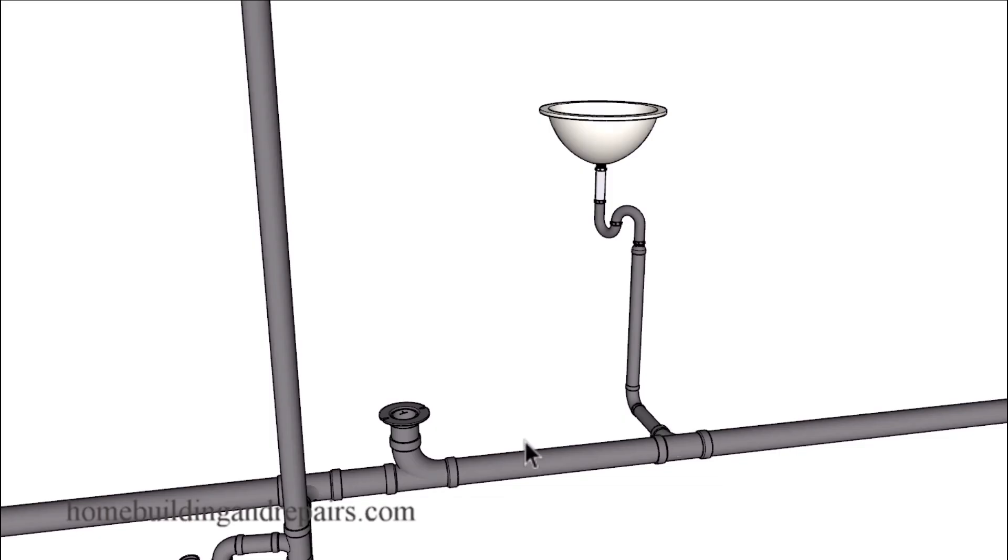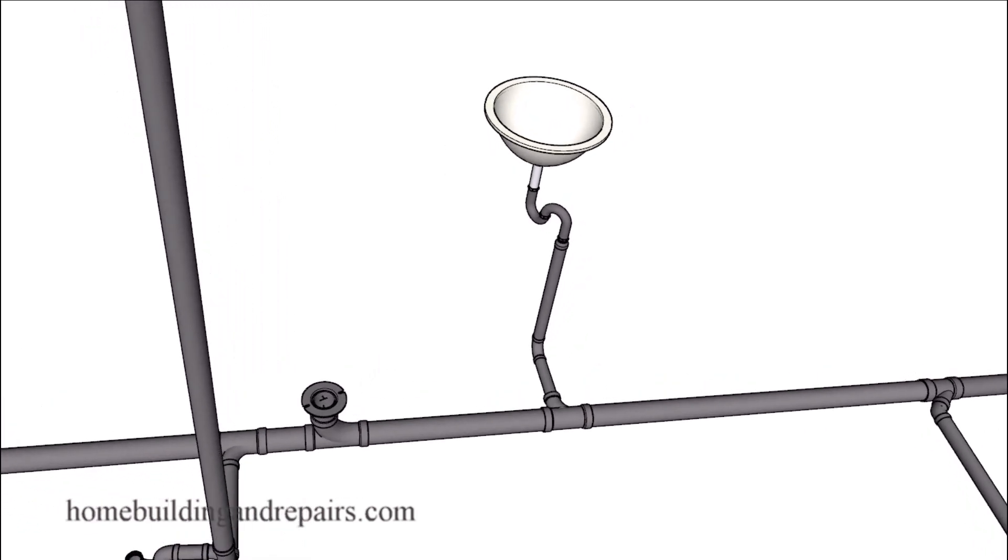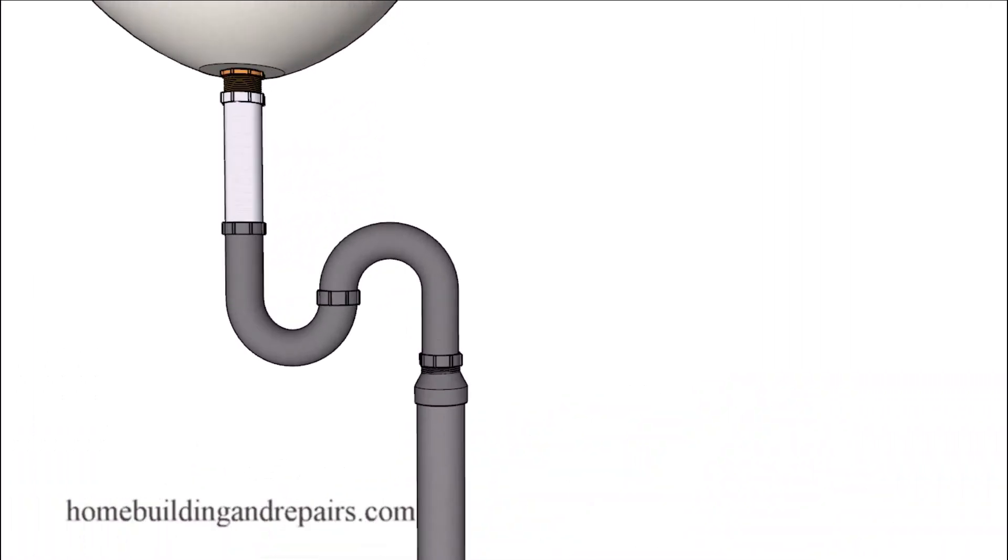For example, if the toilet and the bathtub are draining at the same time, you're putting a lot of water through this pipe and that water creates a stronger siphoning effect. Very good chance you're going to end up pulling the water out of the trap. Hopefully that makes sense. You have a good idea now why an S-trap is no longer used.